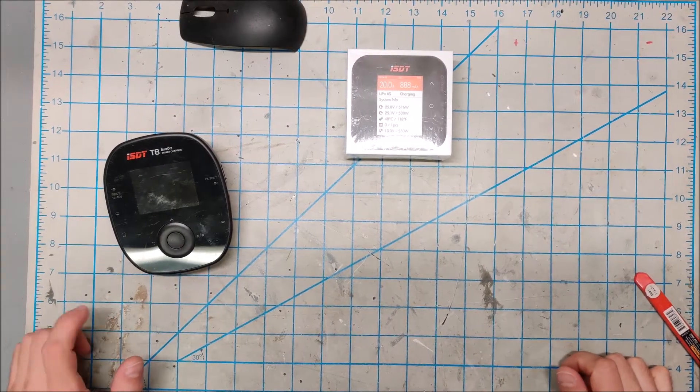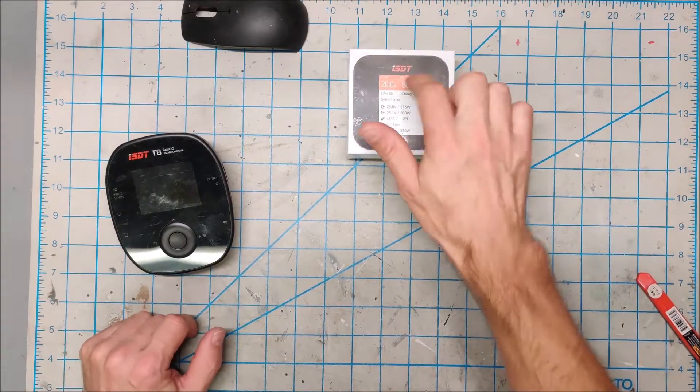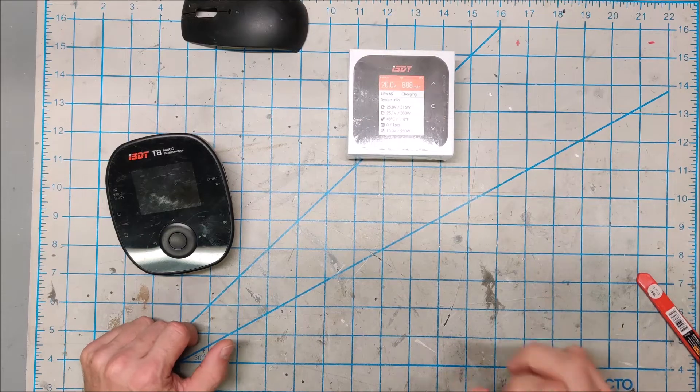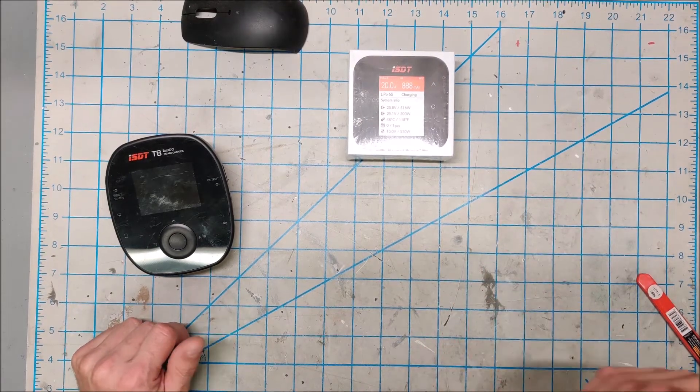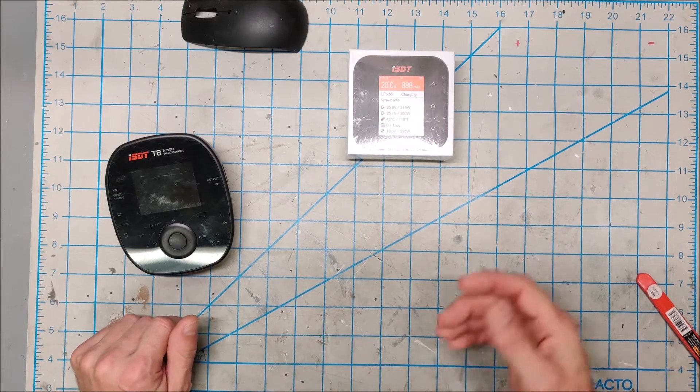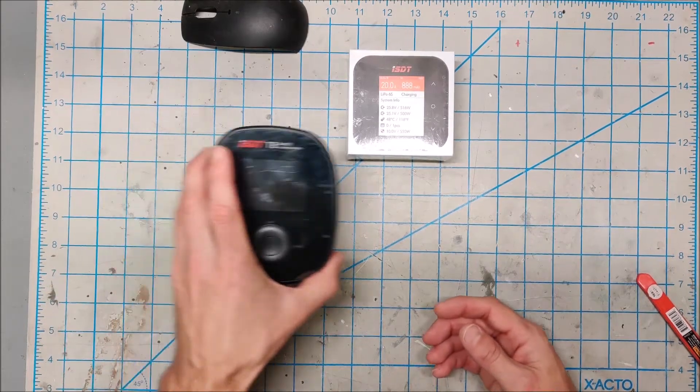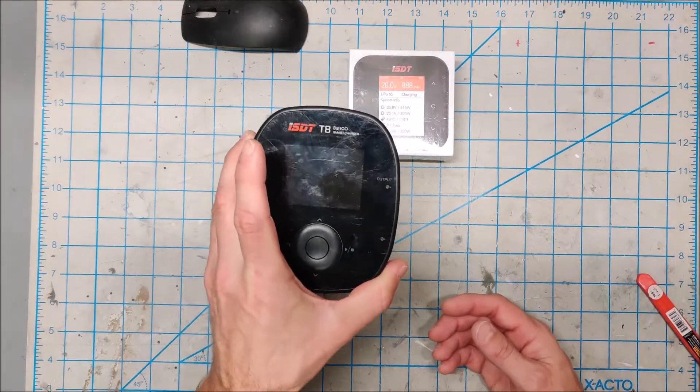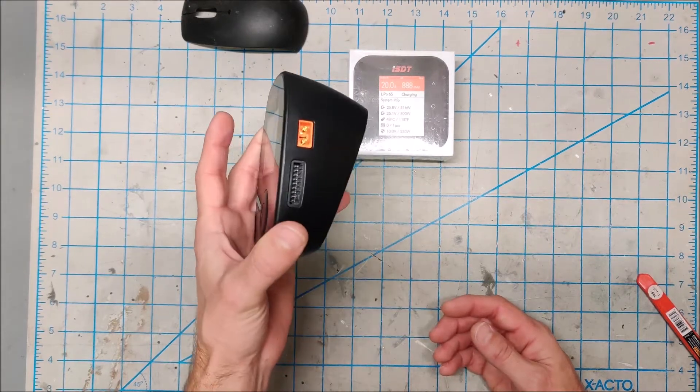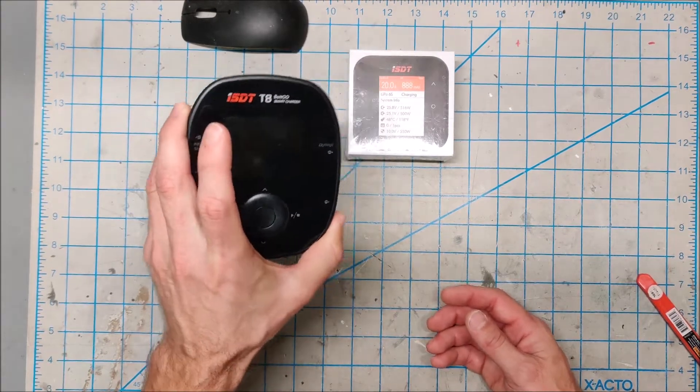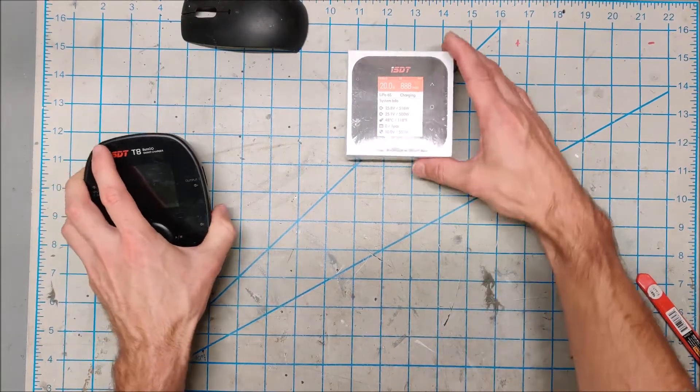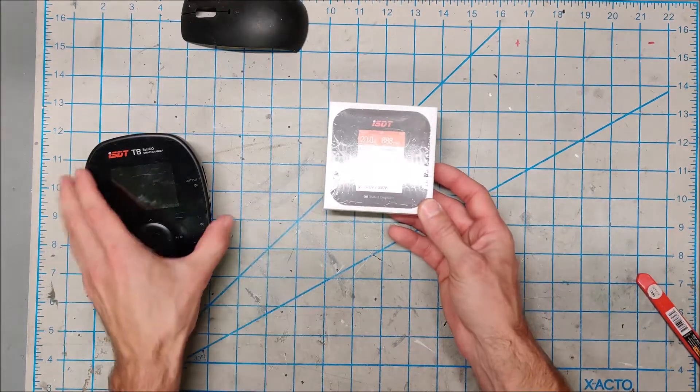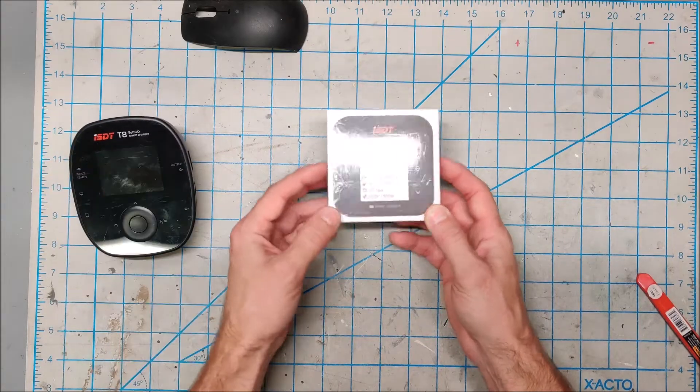You've seen me in my other videos using ISDT products and I really like them because they are inexpensive, have nice interfaces, and do what they say they're going to do. This T8 was the first ISDT product I purchased and it served me very well. I've been very happy with it and use it all the time. But they came out with the Q8, a slightly smaller version of the T8, and I decided to grab this.